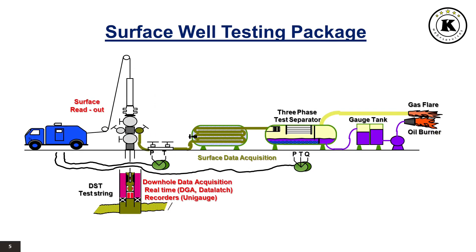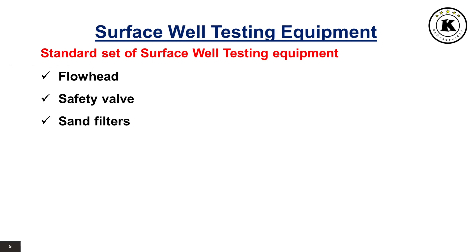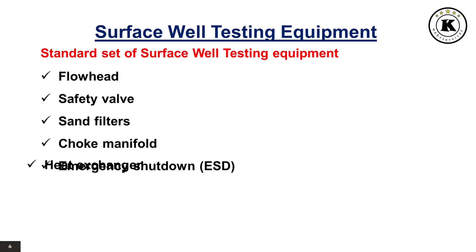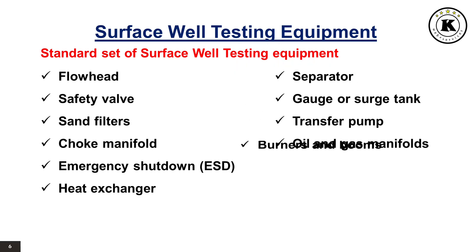This picture shows a complete well testing package. In order to handle the well effluent at surface, a standard set of surface well testing equipment should include the following: Flow Head, Safety Valve, Sand Filters, Choke Manifold, Emergency Shutdown (ESD), Heat Exchanger, Separator, Gauge or Surge Tank, Transfer Pump, Oil and Gas Manifolds, Burners and Booms.